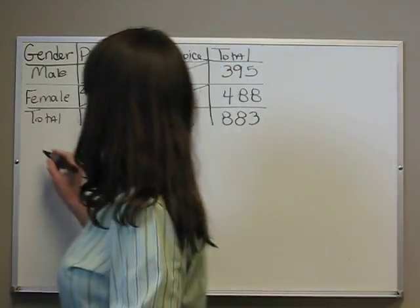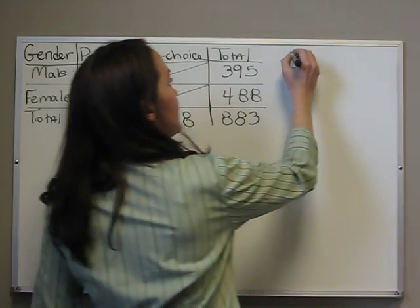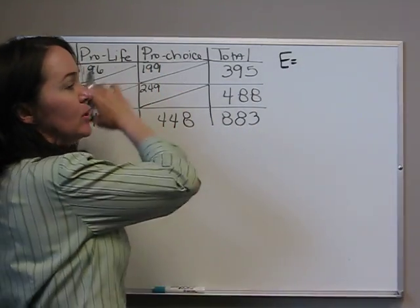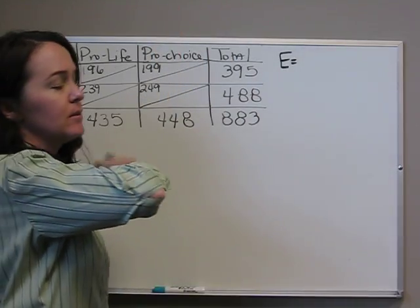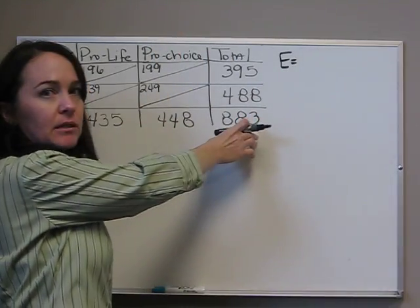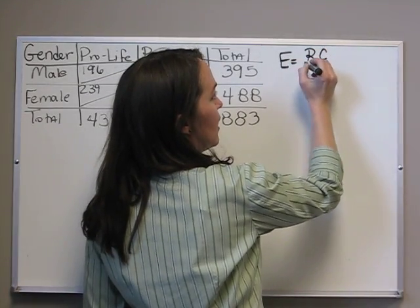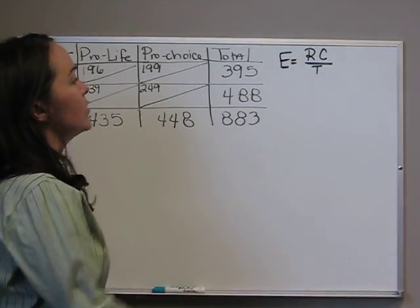So the first step is to always calculate the expected values. The expected values this time for the chi-squared independence test are the total of the row times the total of the column divided by the complete total.